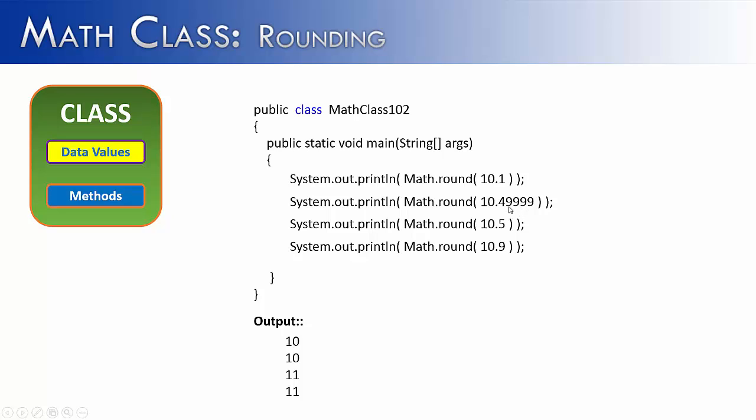You might think that this would round up because of the 999, but it only cares what is in the tenths place. If it's a 5, it goes up. If it's a 4, it goes down.